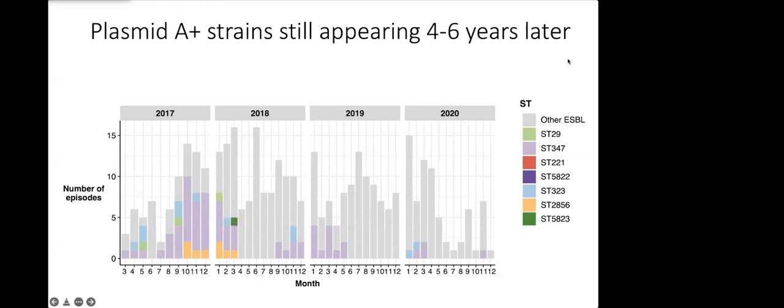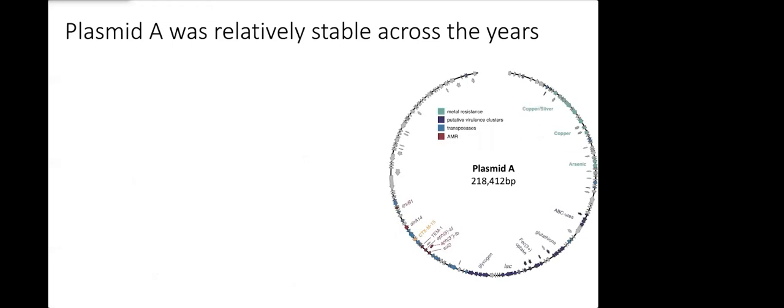ST5823 that now carries plasmid A. If we look at the impact of plasmid A in this early time point from 2017 to the first portion of 2018, 64% of all of the ESBL episodes over this time were due to strains that carried plasmid A.